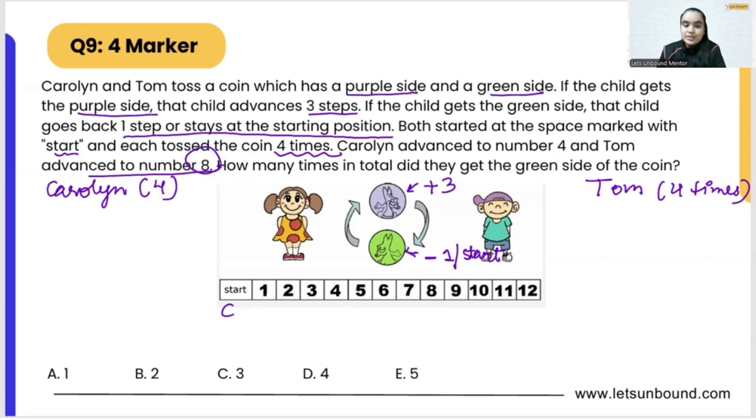For Caroline, we will focus on Caroline's tosses only. Caroline is at starting position but we need to make four tosses and then in the end Caroline will be at which position? Number four, fourth position.